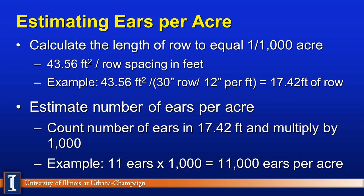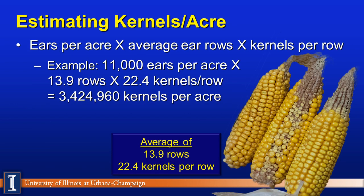Once you've got that number, you can estimate the number of ears per acre by counting the number of ears in that 17.42-foot row length and multiplying by 1,000. For example, if we went to the field and counted 11 ears, that would be 11,000 ears per acre. Next, we look at ears per acre times the average rows per ear times the kernels per row. Remember the Illinois corn had 18 rows — in our example calculation, we have 11,000 ears.